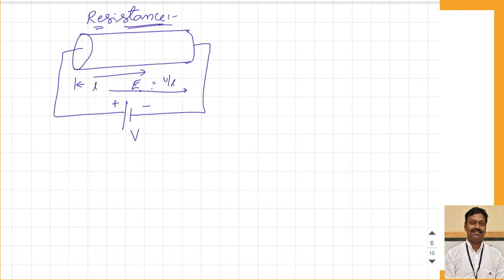Because of this electric field, every electron and positive charge experiences a force. The electron will be attracted towards the positive terminal, and the positive charge will move from the positive terminal to the negative terminal. Since electromagnetic field theory initially analyzed the force on the positive charge, the direction of the positive charge is called the conventional current direction.